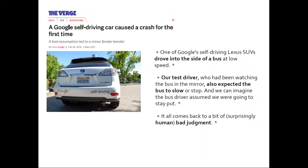This was covered in various places in the press, and one article concluded that it all came back to a bit of surprisingly human bad judgment. The journalist didn't specify which human was to blame, but the implication was that it was the bus driver at fault — the self-driving car and test driver expected the bus driver to slow down, but the bus driver didn't. It's a case where the self-driving car's expectation about what humans will do was not met.